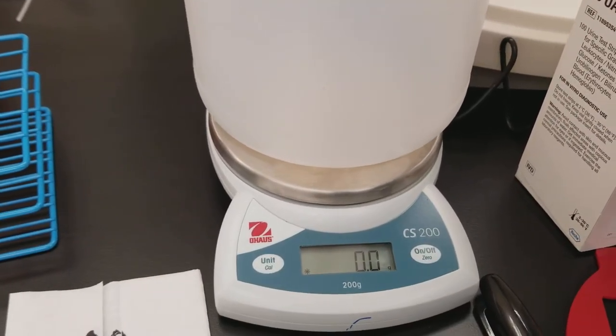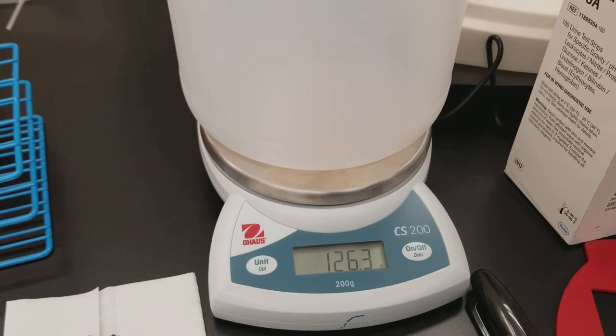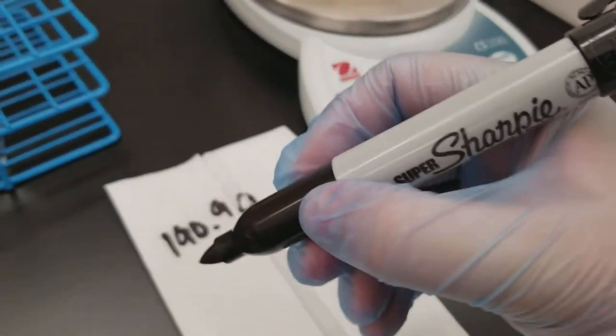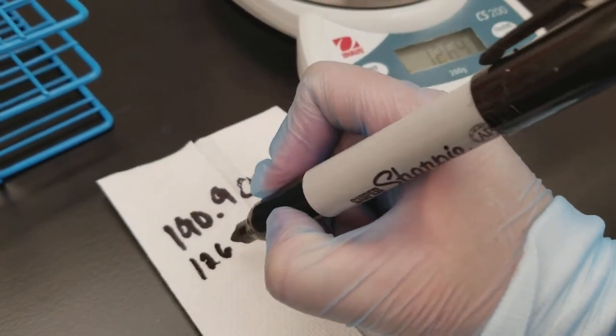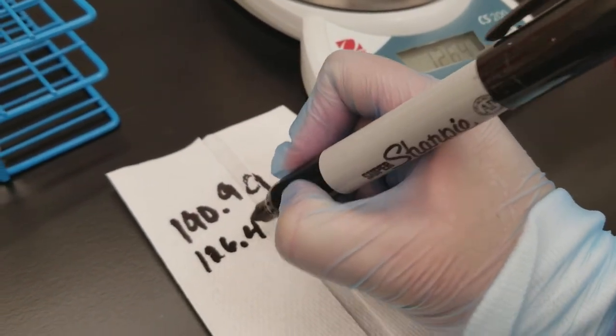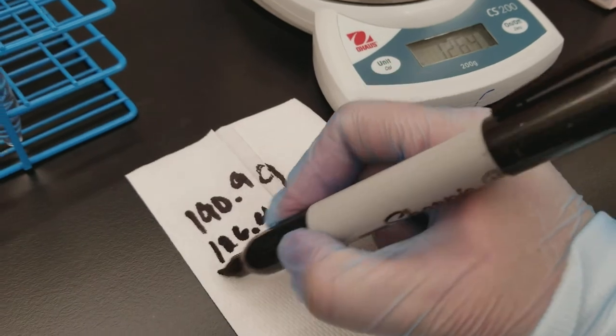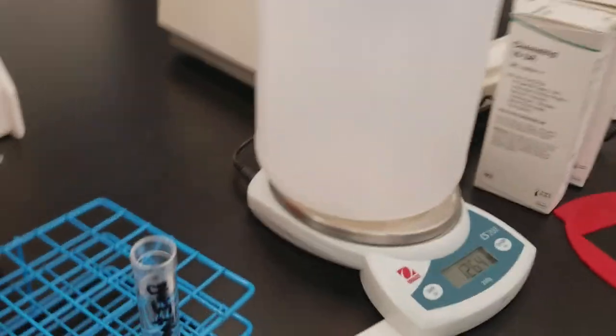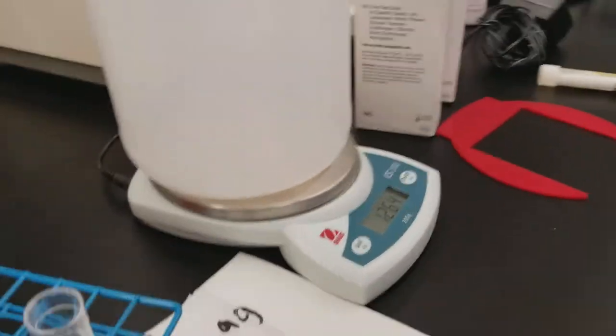So I put this on here. And I see now that my urine jug collection jug was 126.4. And that's all grams. And one gram equals one cc.